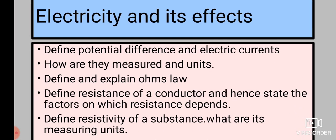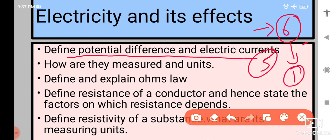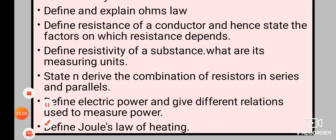Then electricity and its effects. This is asked for 6 marks. Fine. So maybe five marks long type can come and one mark multiple choice or fill in the blank or very short type can come. So in this, which topics you can focus on? First one is define potential difference and electric currents, how are they measured and their units also. This is one point. Define and explain Ohm's law. Define resistance of a conductor and hence state the factors on which resistance depends. Define resistivity of a substance, what are its measuring units.